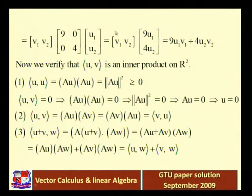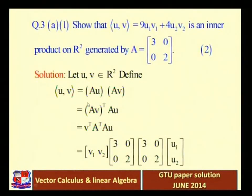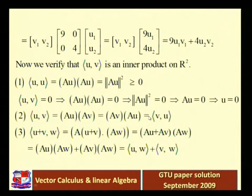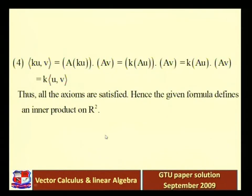The inner product is generated by the matrix [9,0;0,4]. Our question defines the inner product u·v as 9u₁v₁ + 4u₂v₂ on R². We already proved this is an inner product on R², which is generated by the matrix [3,0;0,2]. First we prove this inner product is generated by matrix A = [3,0;0,2] using the theorem, and then we prove it satisfies all conditions to be an inner product space.